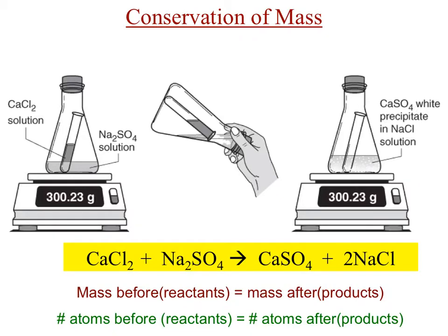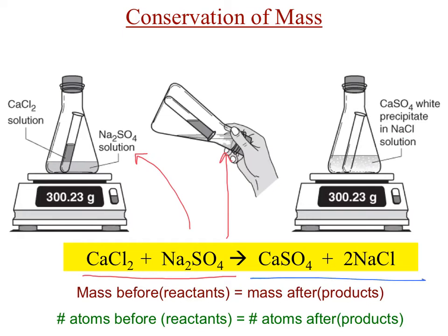If you take a look at the diagram, you will notice that the reactants of calcium chloride and sodium sulfate have been put into vessels and on the electronic balance, and weigh 300.23 grams. If we are to mix those reactants together, they will produce two new substances — calcium sulfate and sodium chloride — and on the balance they weigh the same: 300.23 grams. And that's because of the law of conservation of mass. Notice that the mass of the reactants before the reaction is equal to the mass after the reaction, which is the mass of the products.